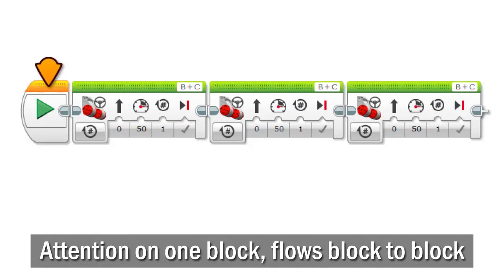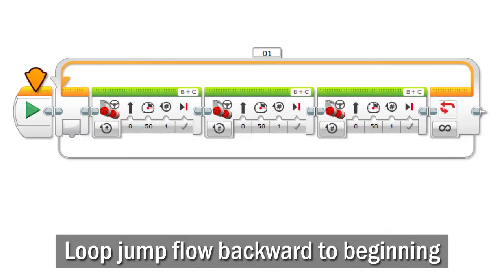Programs pay attention to one block at a time and their attention flows from block to block. Blocks in sequence pass the flow down the line while loops jump the flow backward.